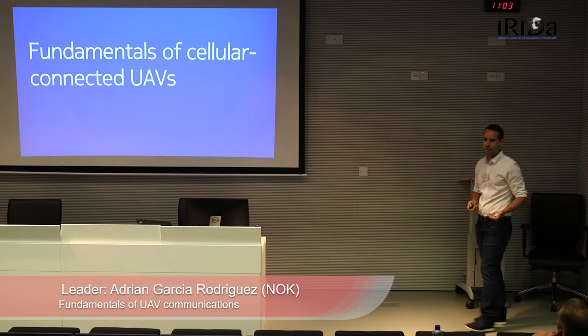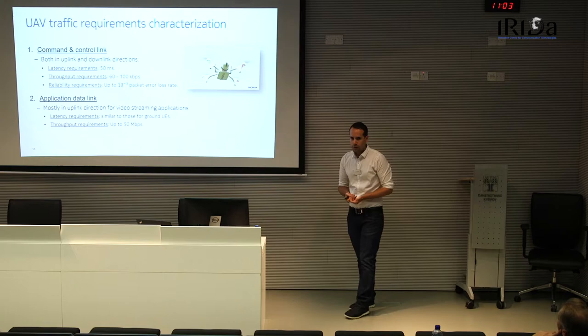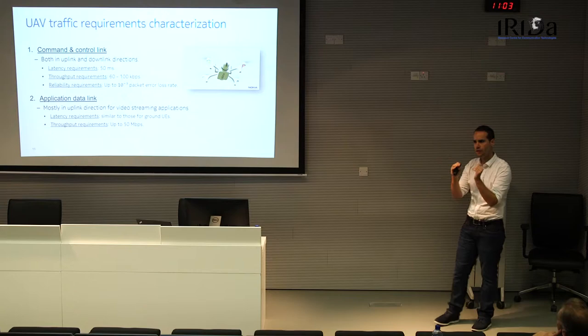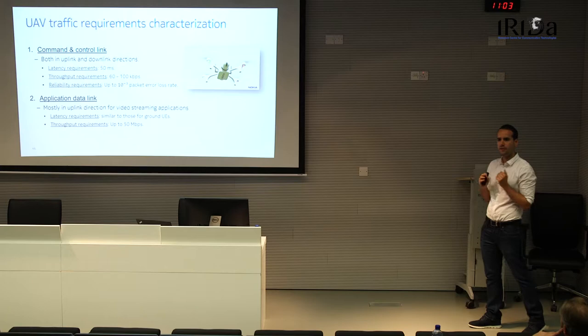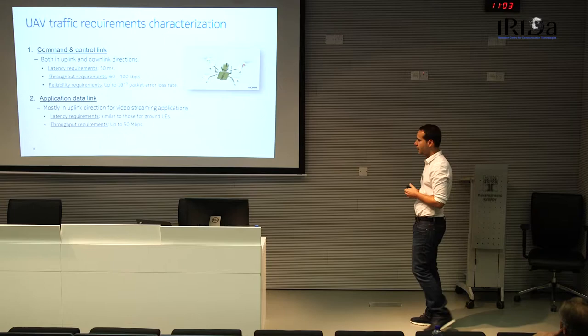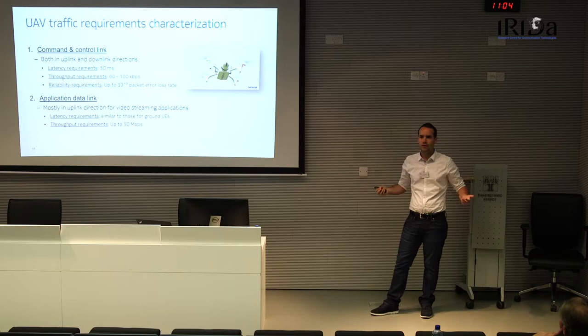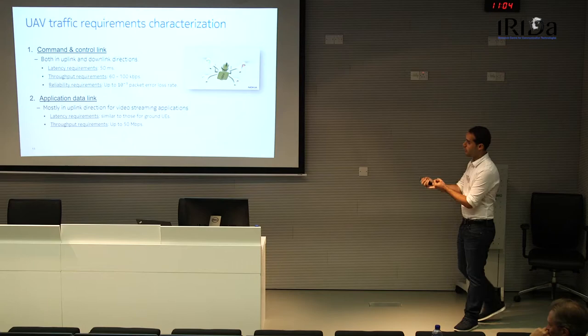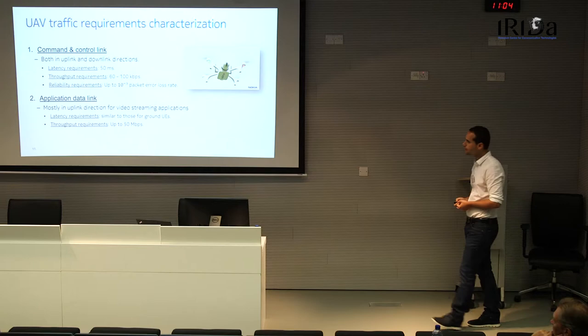Following the same structure as 3GPP — the standardization body for cellular networks — I'll start by evaluating whether existing cellular networks can provide coverage services to UAVs. The first step is to understand the data traffic requirements of these UAVs: how much data, how much latency, and how much reliability is needed to reliably control them.